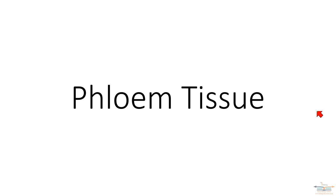In this video we're going to look at the phloem tissue — this is the first part of the phloem transport section. The phloem tissue is made up of three different cell types: the sieve tube element, the companion cell, and the phloem parenchyma. We're going to look at each of these cell types with an emphasis on the sieve tube elements and the companion cells.